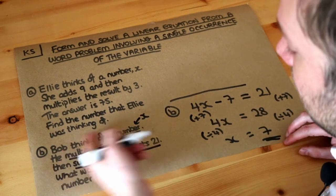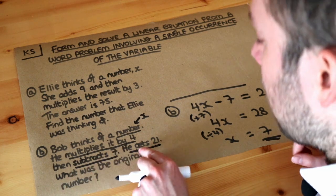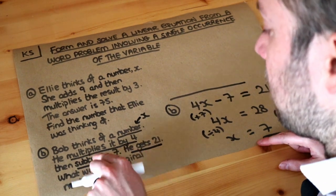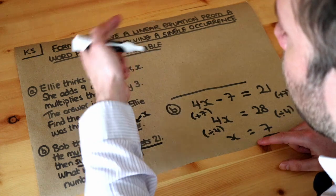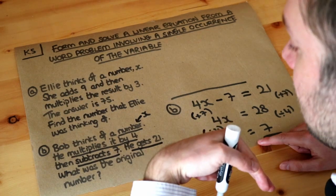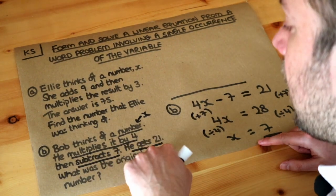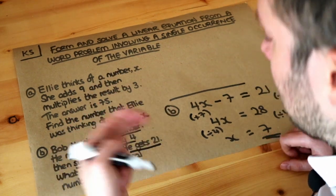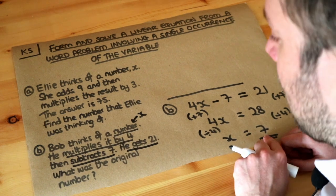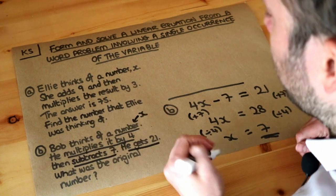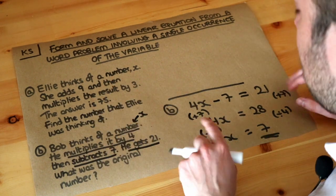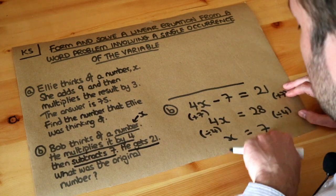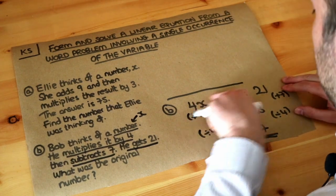You might think you can just do this in your head, and you probably can by working backwards from 21. If you subtracted 7 to get 21, working backwards gives you 28, then dividing by 4 gives 7. You could work backwards, but that's missing the point. The point is to form and solve an algebraic equation.